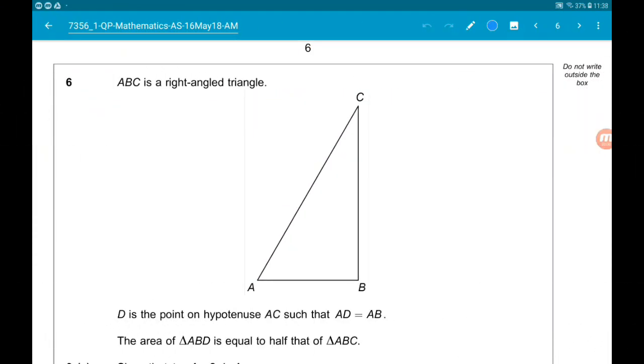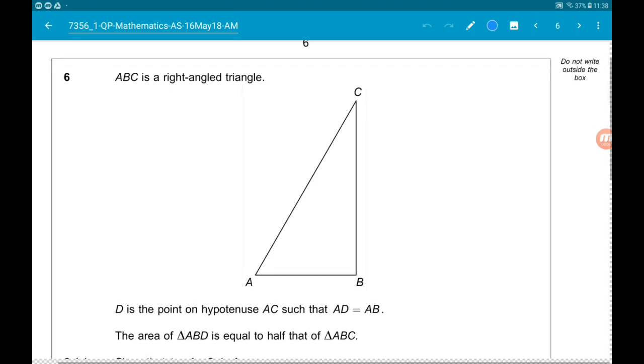Okay, question six. We have another big one here. So we have a right-angled triangle A, B, C.